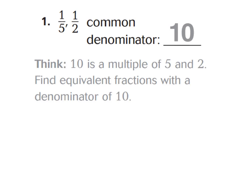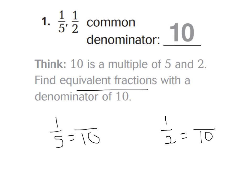Now we're going to find equivalent fractions. If you have 1 fifth with the new denominator of 10, and 1 half with the denominator of 10, you can make an equivalent fraction. This is something we learned in 4th grade. 1 fifth equals how many tenths? You can multiply 5 times what is 10, which would be 2. So whatever you multiply the denominator by, you multiply the numerator by. So 1 fifth is the same value as 2 tenths, and 1 half has the same value as 5 tenths. So our common denominator is 10, and the equivalent fractions are 2 tenths and 5 tenths.